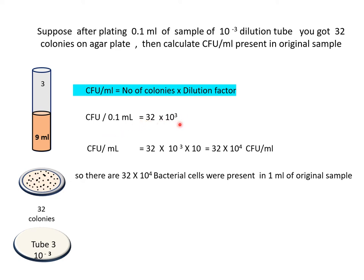So it will become 32 into 10 power 3 CFU per 0.1 ml. Then we have to convert CFU per 0.1 ml into CFU per ml by multiplying by 10. So CFU per ml will become 32 into 10 power 3 multiplied by 10, which equals 32 into 10 power 4 CFU per ml. So there are 32 into 10 power 4 bacterial cells present in 1 ml of the original sample.